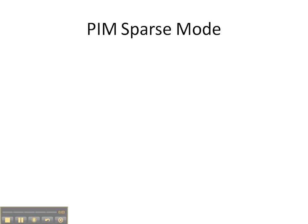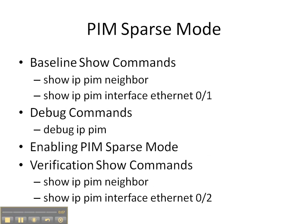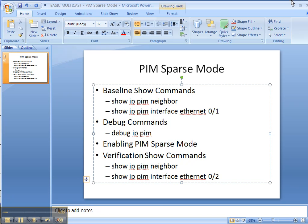Welcome everybody to this video cheat sheet where we're going to be enabling PIM sparse mode on our network. We're going to start off with the baseline show commands of show IP PIM neighbor and interface to see if PIM has already been configured on our routers. Then we're going to enable the debug command, debug IP PIM, so we can see how things unfold when we enable PIM sparse mode on our network. And then we're going to finish up with the verification show commands of show IP PIM neighbor and interface to see how things have changed now that we've enabled PIM sparse mode.